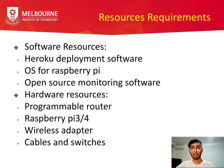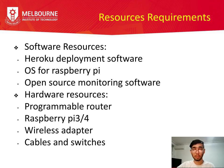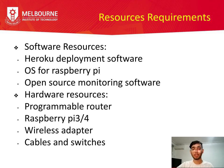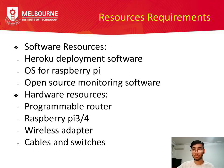Moving on to resource requirements — these come down to three things: human resources, hardware, and software. Since we'll be doing this project ourselves, no extra human resources are needed. Software resources include Heroku deployment software as specified by the client, an operating system for Raspberry Pi, and an open-source monitoring tool, likely Nagios. Hardware resources include a programmable router, a Raspberry Pi 3 or 4, a wireless adapter, cable switches, and network connection components.